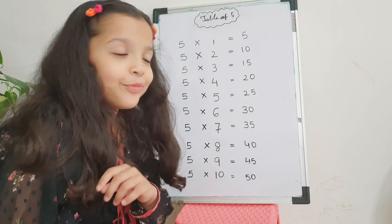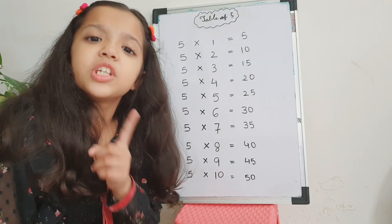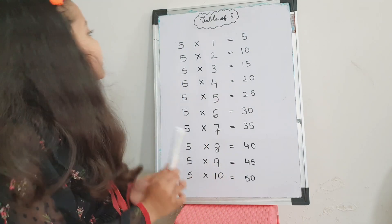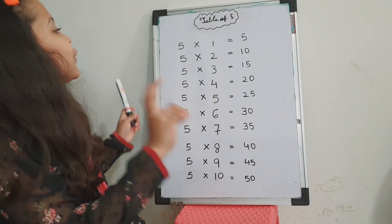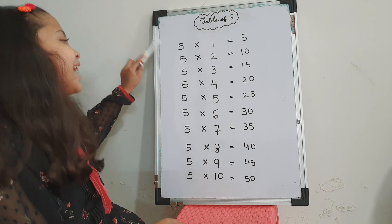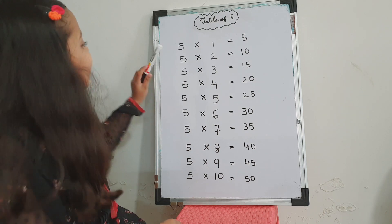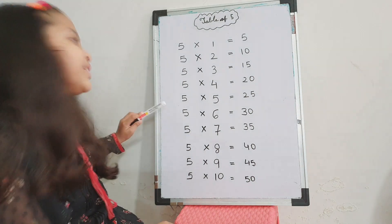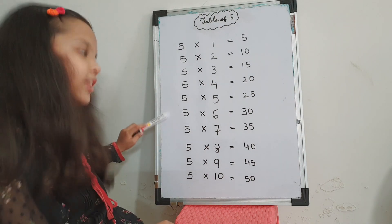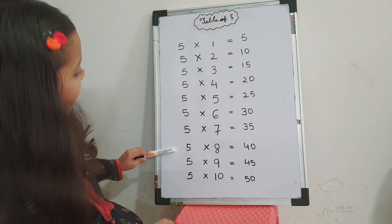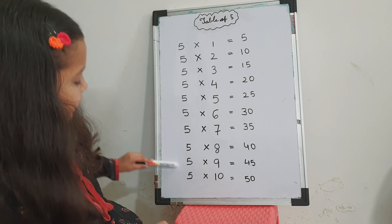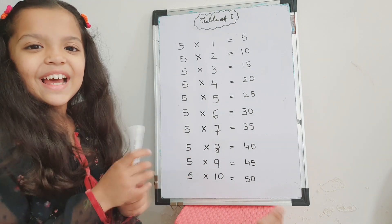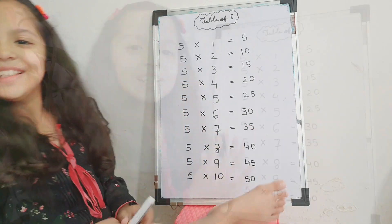We learned the table of five, but we have to revise it to make sure we learned it properly. So let's go — three, two, one, star! 5 ones are 5, 5 twos are 10, 5 threes are 15, 5 fours are 20, 5 fives are 25, 5 sixes are 30, 5 sevens are 35, 5 eights are 40, 5 nines are 45, 5 tens are 50. Very good, we learned the table of five properly!